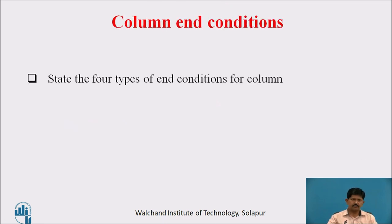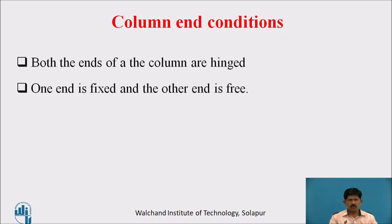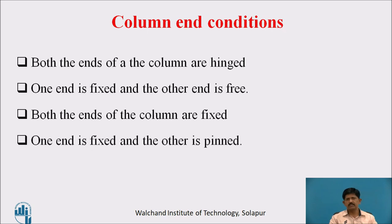End conditions for a column — there are four types. First: both ends of the column are hinged. Second: one end is fixed and the other end is free. Third: both ends of the column are fixed. Fourth: one end is fixed and the other is pinned or hinged.